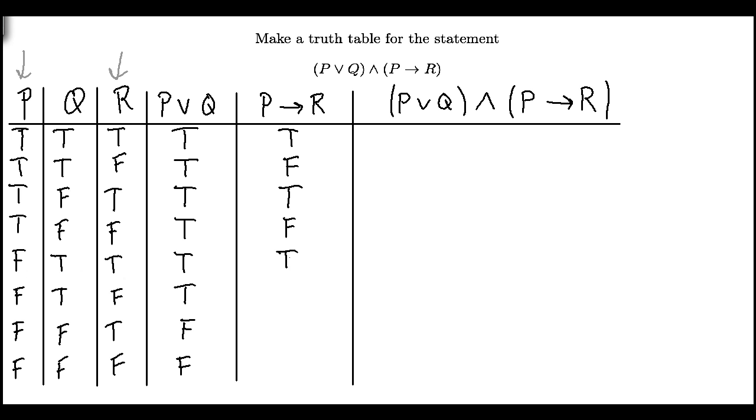False implies true is true. False implies false is still true. False implies true is true. False implies false is true.